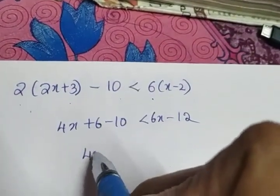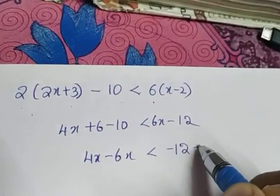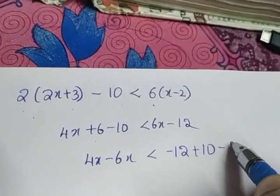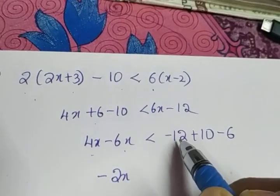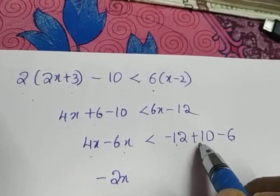4x - 6x < -12. Take -10 to the right side, it becomes +10. Take +6 to the right side, it becomes -6. 4x - 6x is -2x. What is this value? -12 - 6 gives -18, -18 + 10 gives -8.